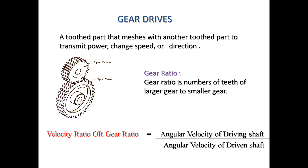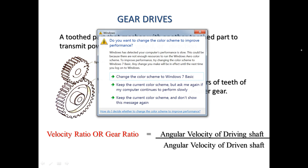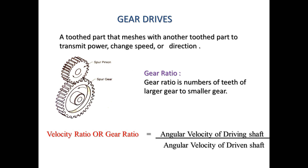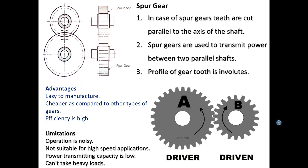Now we will be discussing gear drives. Before starting with the types of gears, we will discuss some simple terminology. The gear ratio is the number of teeth of the larger gear to the smaller gear. We define gear ratio or velocity ratio as the angular velocity of the driving shaft to the angular velocity of the driven shaft. We will discuss detailed terminology and numerical problems in the next lecture; here we will cover the types of gears.